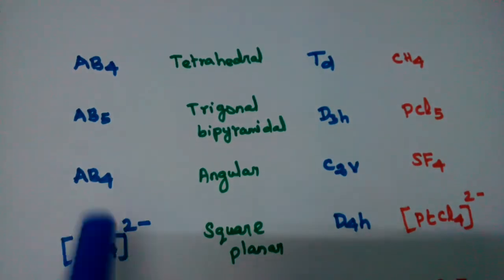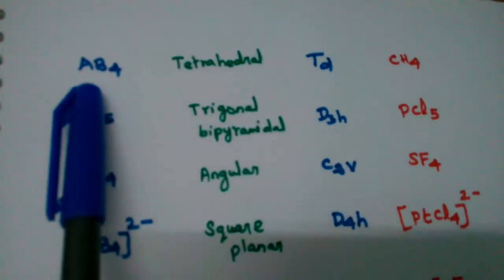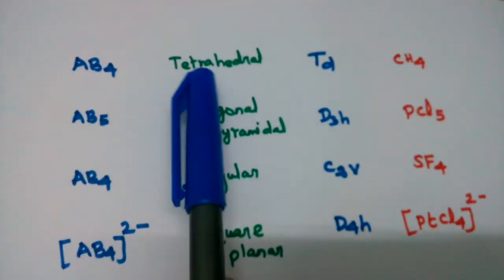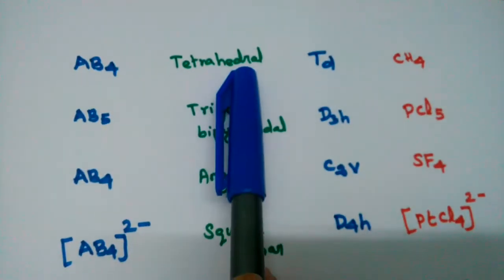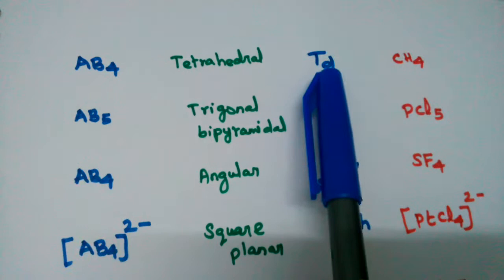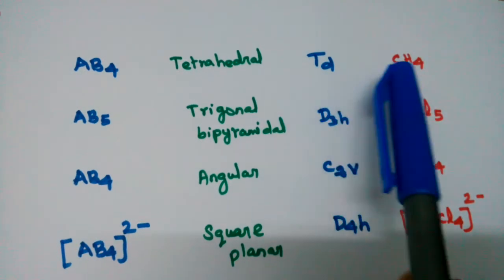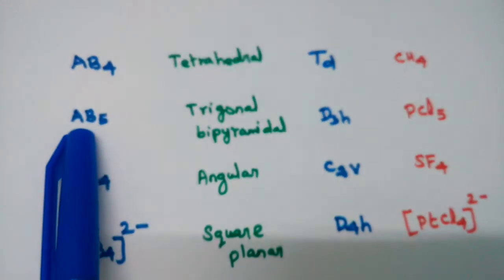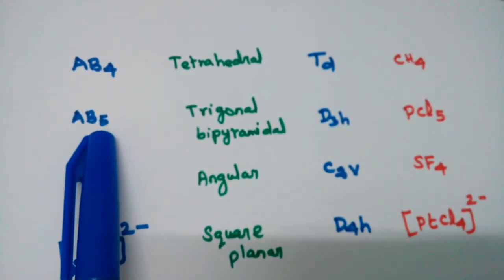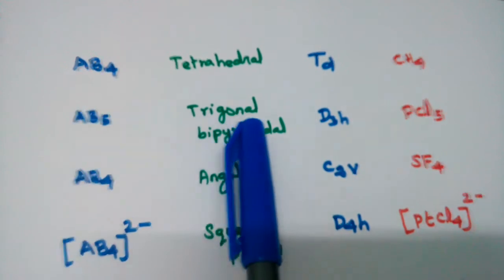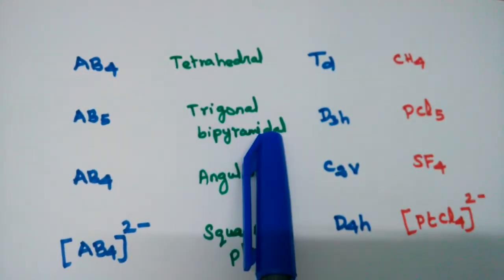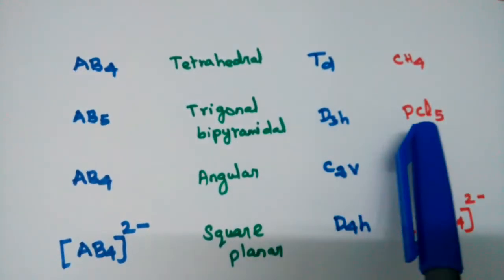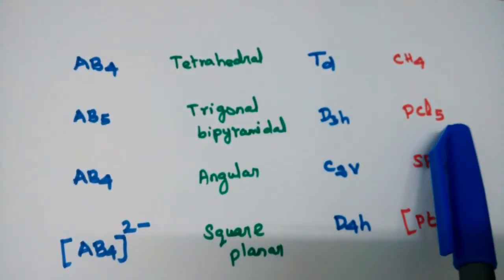Next, general formula AB4, geometry tetrahedral, point group Td, example CH4. General formula AB5, geometry trigonal bipyramidal, point group D3h, example PCl5.